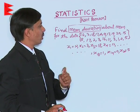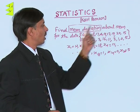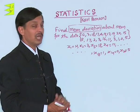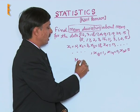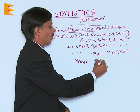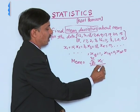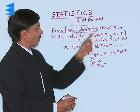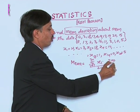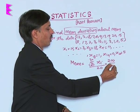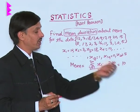Before finding the mean deviation, we first need to find the mean. The mean is the sum of all observations from i=1 to 20, divided by 20. The sum of all these observations is 200, and the number of observations is 20, so the mean comes out to be 10.